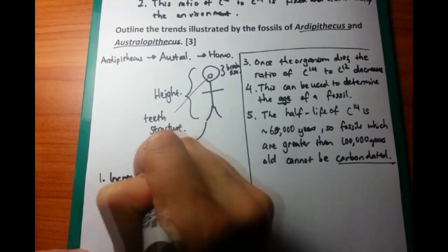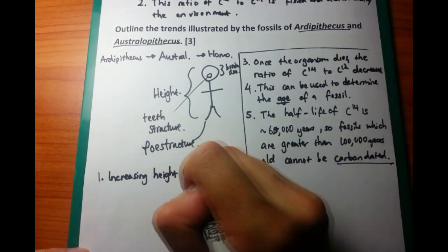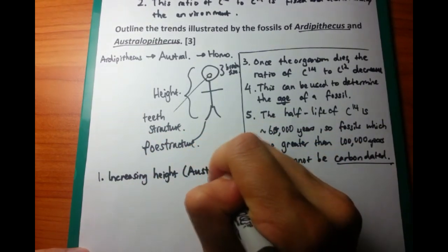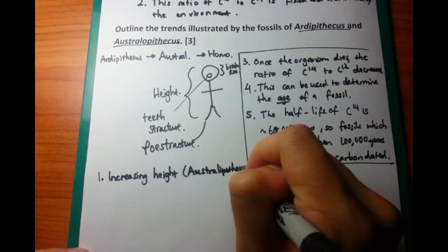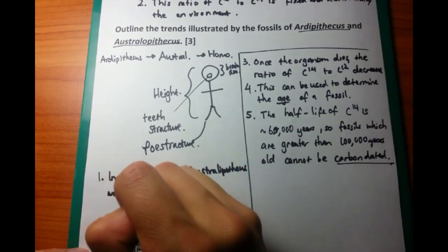And this is because previously Ardipithecus had more of a stooped bending over structure, while Australopithecus standing up, being much more upright than its more primitive cousin.